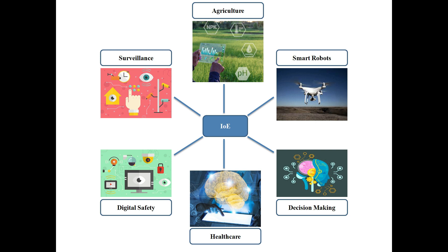In agriculture, automatic irrigation systems supply water or nutrients to fields. Using image processing, we can analyze crop health and the system itself can decide which part of the field is lacking certain nutrients or what types of diseases are present in the crops.